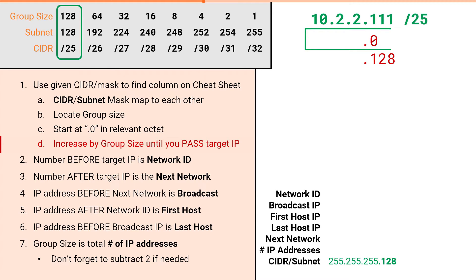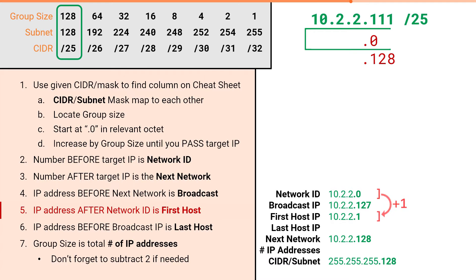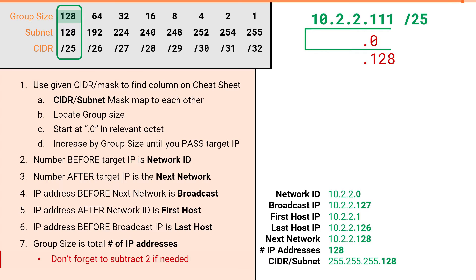At this point, we can fill in all the remaining attributes. The number before our target IP is our network ID: 10.2.2.0. The number after our target IP is our next network: 10.2.2.128. The IP address before our next network is 10.2.2.127, which is our broadcast IP. Our first host IP is 10.2.2.1, and our last host IP is 10.2.2.126. Our group size of 128 is the total number of addresses, giving us 128 total or 126 usable addresses in a slash 25.